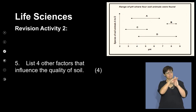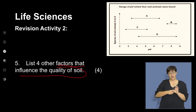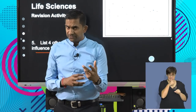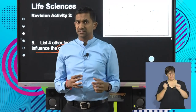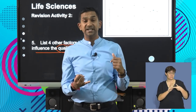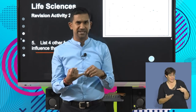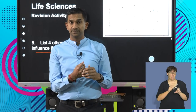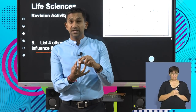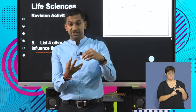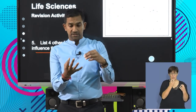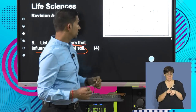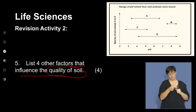List four other factors that influence the quality of soil. We know that soil quality is affected by various factors. We've just looked at pH. Other factors include water retention capacity, humus content, and air holding capacity. So: water holding capacity, humus content, air holding capacity, and pH are all factors that influence the quality of soil.